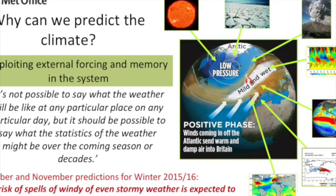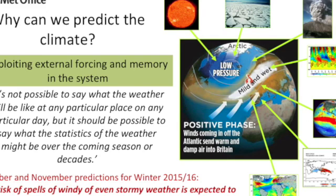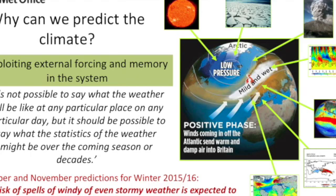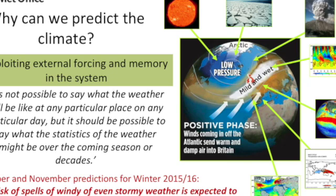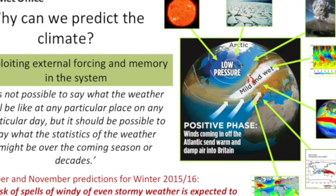We are beginning to extract real skill. For the winter 2015-16, where we had devastating floods, we were already saying in the autumn that risks of spells of windy or even stormy weather were expected to be greater than usual for the time of year. Contingency planners can use this information to get ready and ensure they have the resources to help people in flooded areas.